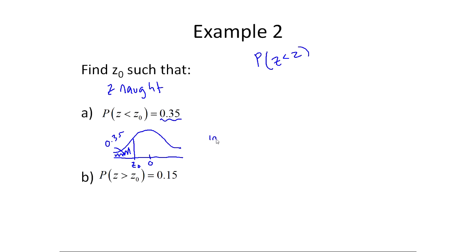Now that I have the picture, I can see this would be inverse norm of 0.35, which you can check on your calculator. Z naught, in this case, would be minus 0.39. So in other words, I could rewrite this question into a statement, and I could say the probability that z is less than minus 0.39 is equal to 0.35. That's just what we figured out.